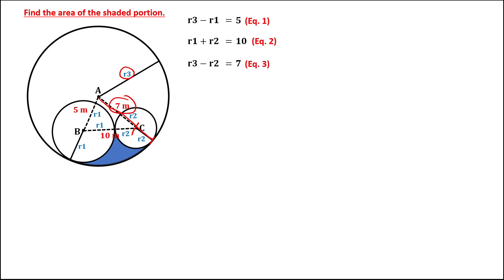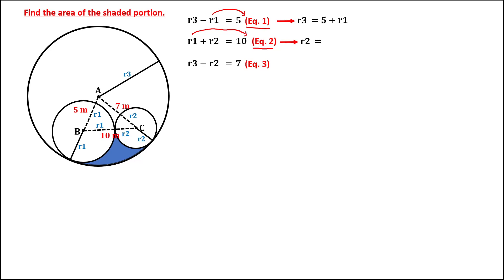So we have R3 minus R2 equals 7, and this is equation number 3. From equation number 1, to solve for R3, transpose negative R1 to the other side, so R3 equals 5 plus R1. From equation number 2, to solve for R2, transpose positive R1 to the other side, so R2 equals 10 minus R1.